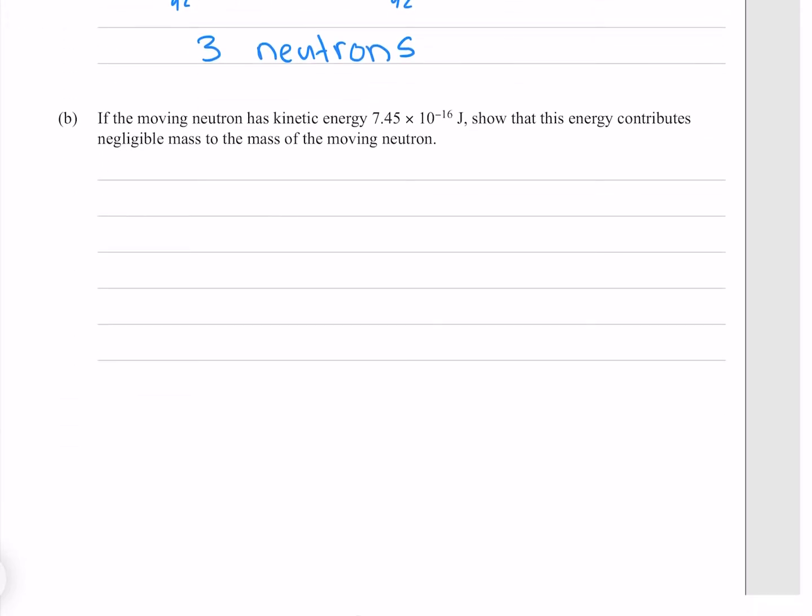If the moving neutron has kinetic energy of 7.45 times 10 to the minus 16 joules, show that this energy contributes negligible mass to the mass of the moving neutron. So we can find our extra moving mass.